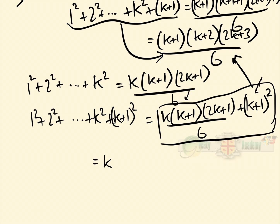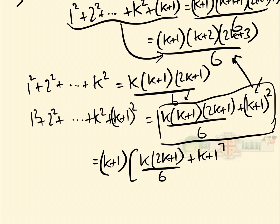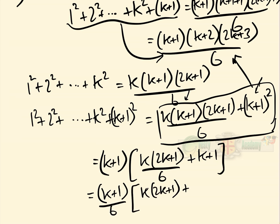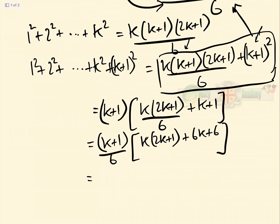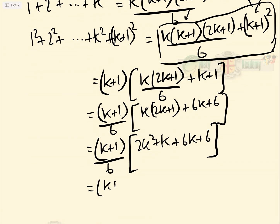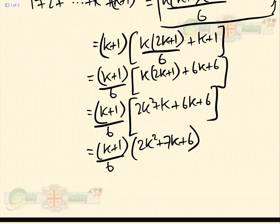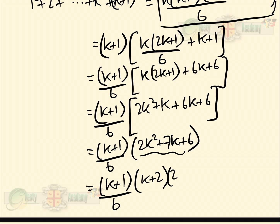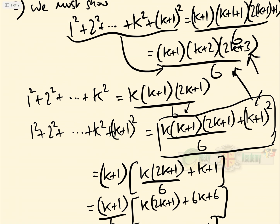So that equals — we can take (k+1) out as a factor: (k+1) times [k(2k+1) over 6 plus (k+1)]. Taking 6 out as well gives us (k+1) over 6 times [k(2k+1) + 6(k+1)], which is (k+1) over 6 times (2k² + k + 6k + 6). Tidying up inside the bracket: (k+1) over 6 times (2k² + 7k + 6). And we can factorise that to give (k+1) over 6 times (k+2)(2k+3). And that is exactly what we seek.